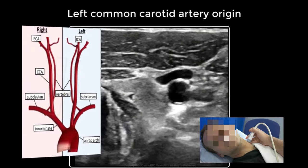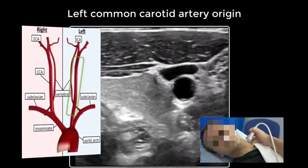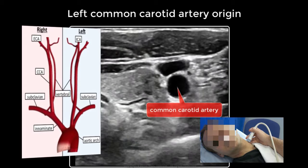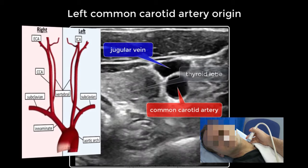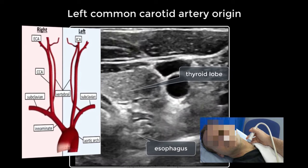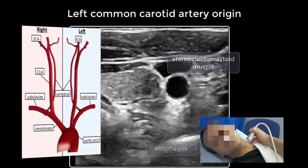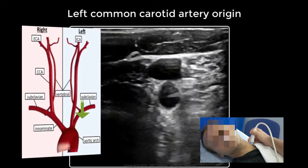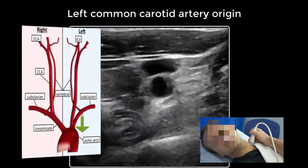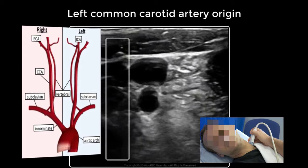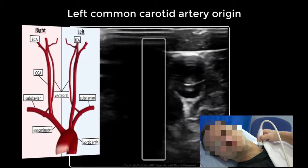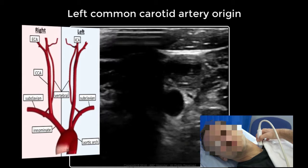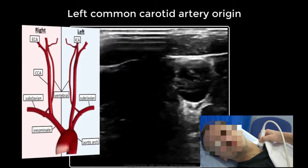The origin of the left common carotid artery may not be visualised. First, identify the origin of the common carotid artery in transverse view — the jugular vein, the thyroid lobe, the oesophagus and the sternocleidomastoid muscle can be visualised. Move the transducer down towards the base of the neck, tilting the transducer downwards. An acoustic shadow will appear on the screen. This shadow is caused by the clavicle and represents the main obstacle to visualising the origin of the left common carotid artery.